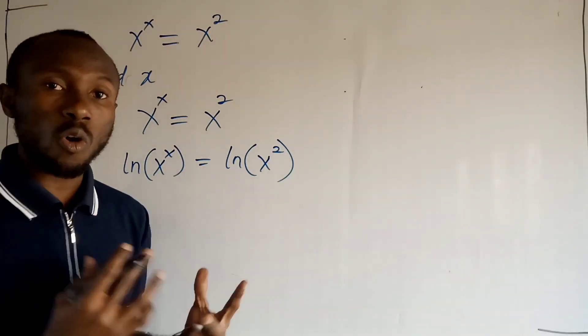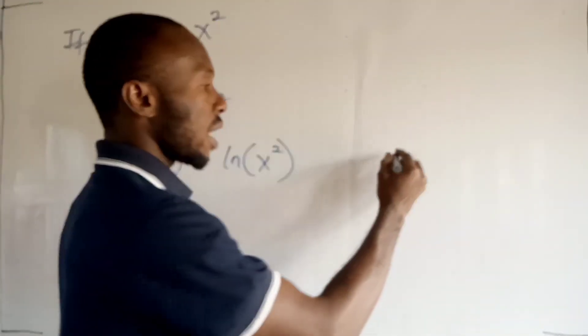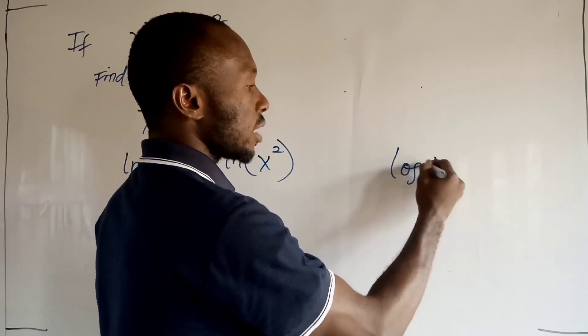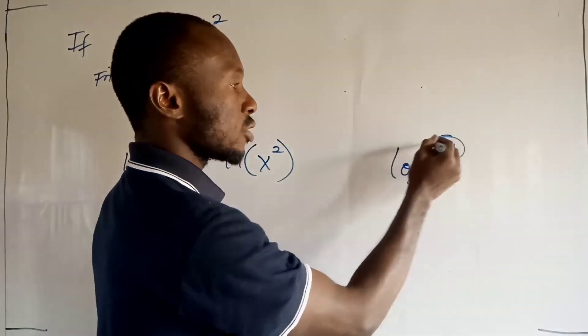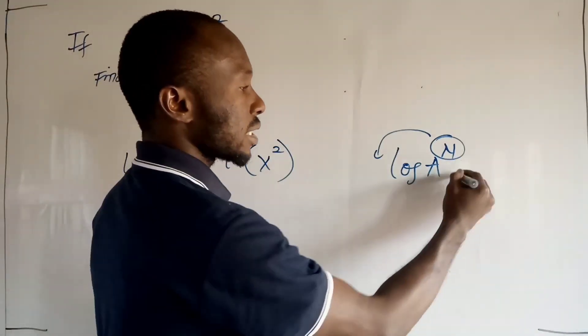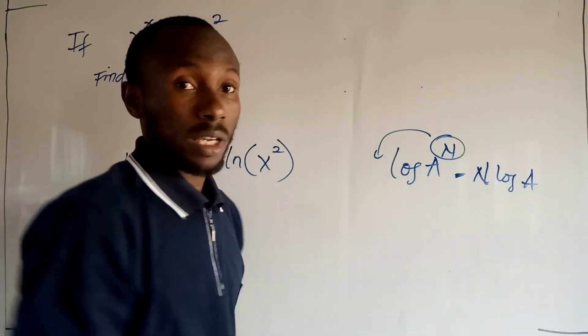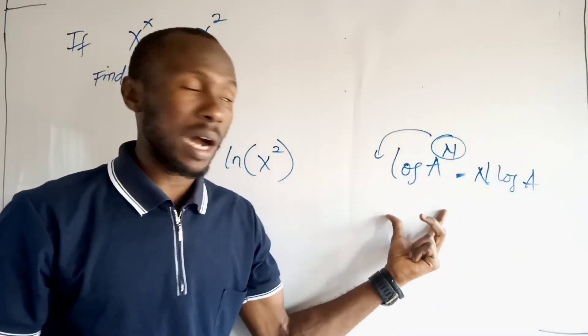Now remember one of the laws of logarithm that says if I have log a to the power n, because of this logarithm, this is going to fall behind. So I have it as n log a. Okay, so that is one law I want you to put in mind.